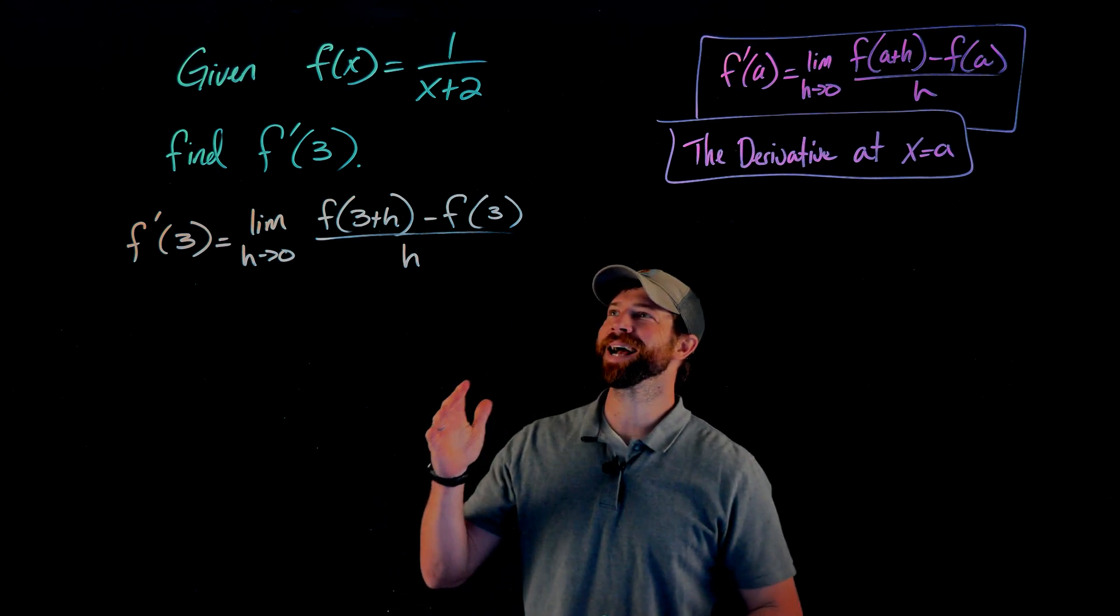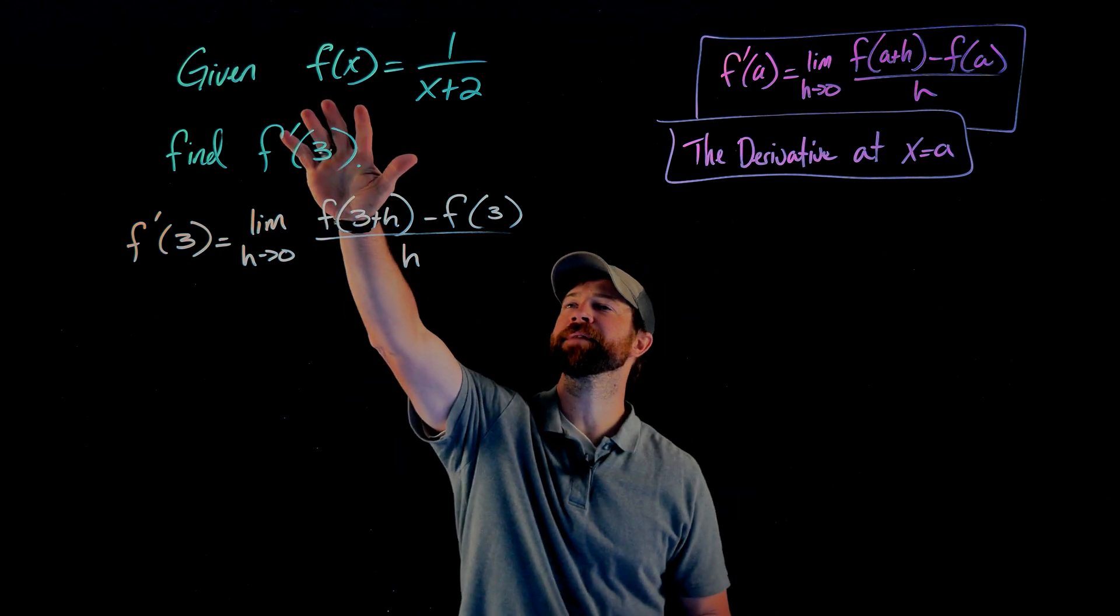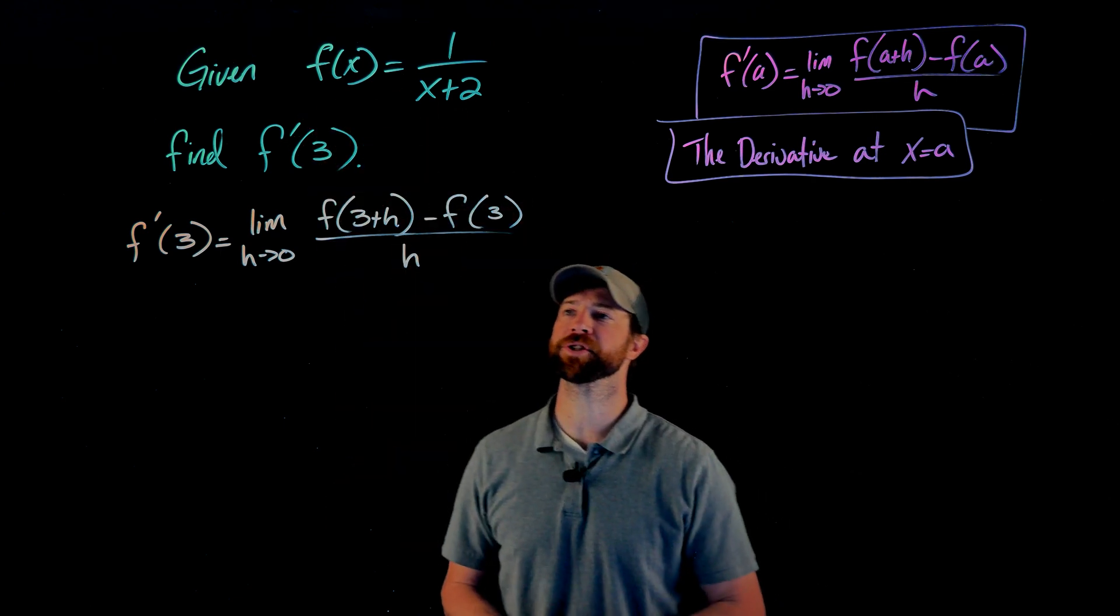In this example here, we're being asked to find the derivative at x equals 3 for the function f of x equals 1 over x plus 2.